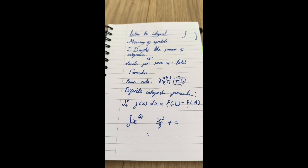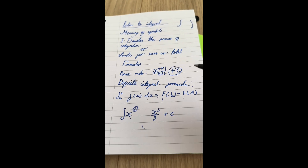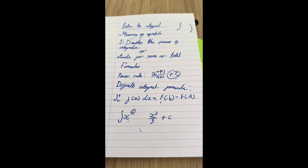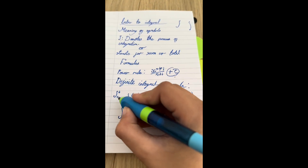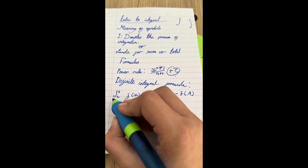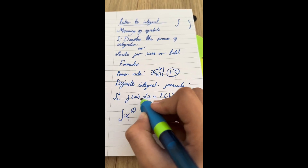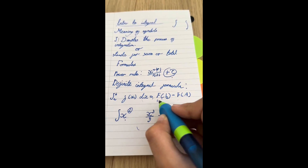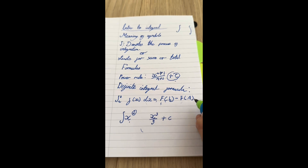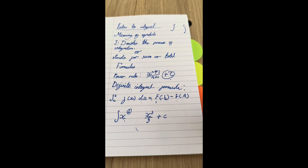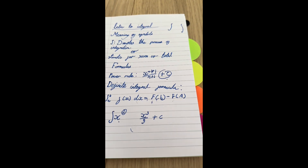Now let's do the definite integral formula. This is really important — don't forget it at all, because it's so important that some people even call it the Fundamental Theorem of Calculus. If we have the integration symbol from a to b of f(x) dx, that is equal to f(b) minus f(a). We'll be explaining that in about 20 seconds.